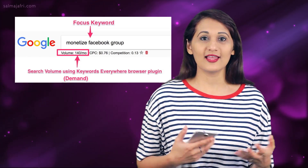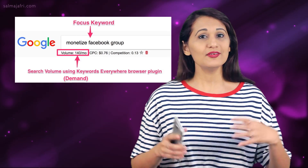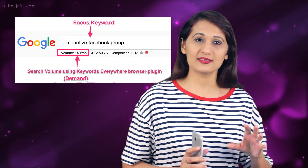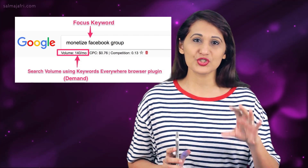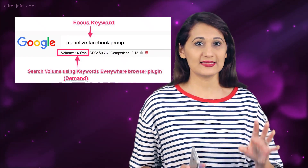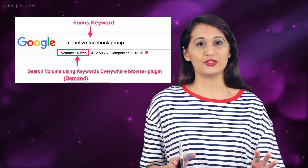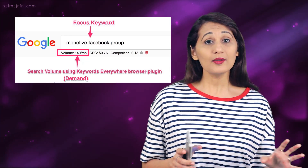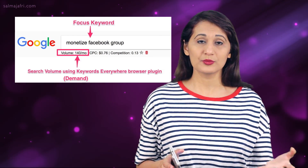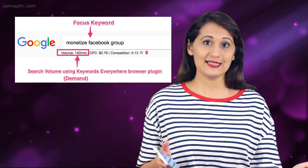To find the search volume for your focus keyword, I use a tool called Keywords Everywhere. Even though it may not be the most scientific way, it gives me a gut check on what kind of search volume a keyword has in ballpark figures. I usually want to aim for a high search volume so that it's a video that is in demand.